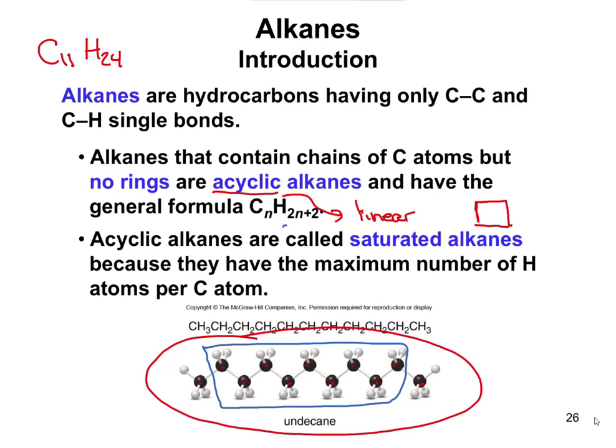Then we have the plus 2 in 2n+2. Those two extras are because at the very end of the molecule, those carbons each have three hydrogens. CH3s are often caps found at the end of molecules. In this case, we have CH3s on both ends serving as caps. So instead of those being 2n, each one has one extra hydrogen — giving us the 2n+2, one extra on each end.